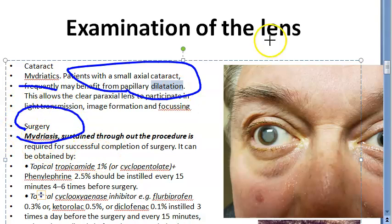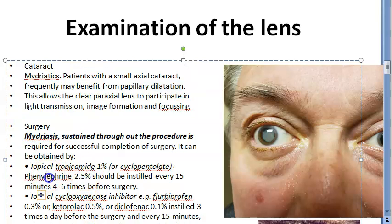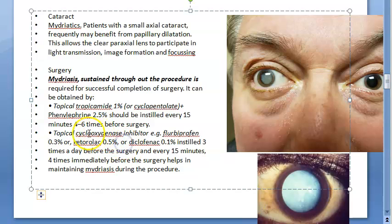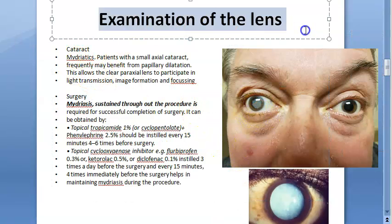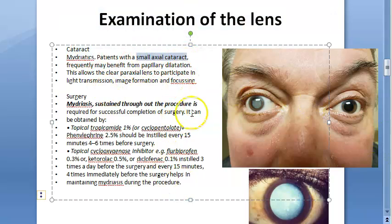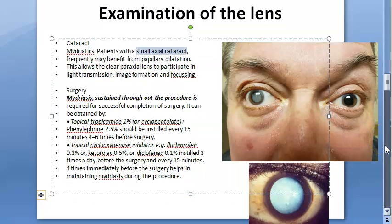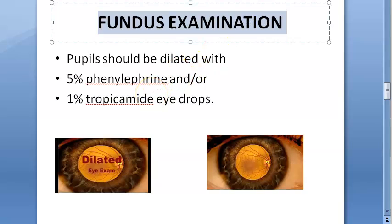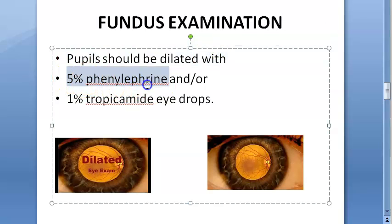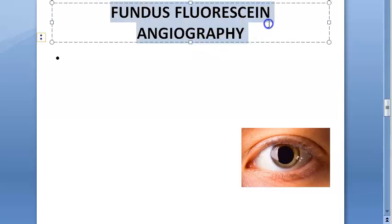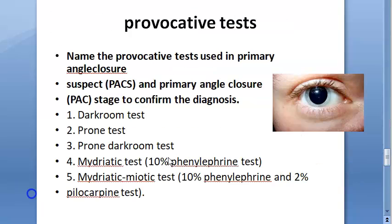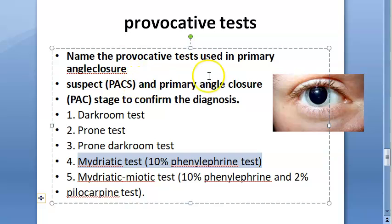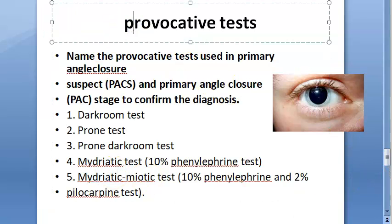During cataract surgery, mydriasis is maintained using tropicamide and phenylephrine, and also cyclooxygenase inhibitors like ketorolac. So mydriatics are used during surgery as well. For patients with a small axial cataract, dilation can help them see better. Fundus examination also requires a dilated pupil — you use phenylephrine and tropicamide to observe the retina, choroid, and so on. Fundus fluorescein angiography similarly requires a mydriatic.